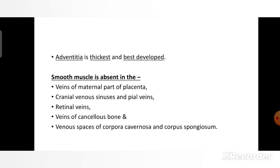Smooth muscle is absent in the veins of the maternal part of the placenta, cranial venous sinus and pile veins, retinal veins, cancellous bone veins, and veins at the base of corpora cavernosa and corpus spongiosum.